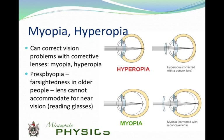There are eye conditions where you can't see very well — nearsightedness and farsightedness — and we need to use corrective lenses to fix them. Hyperopia is another word for farsightedness, when you can see things far away but not things very close. Myopia is another term for nearsightedness, when you can see things close but not far away.